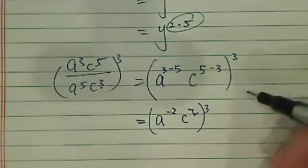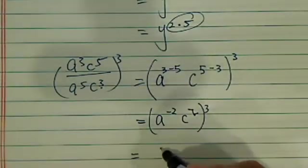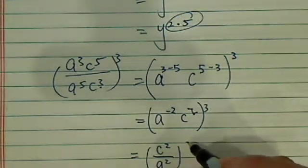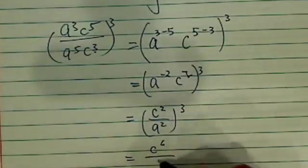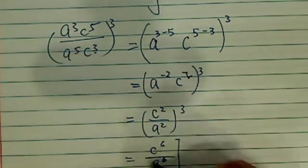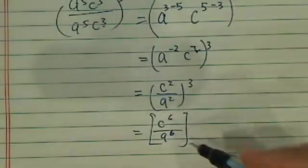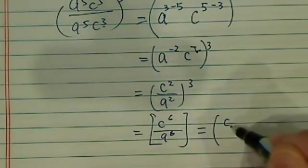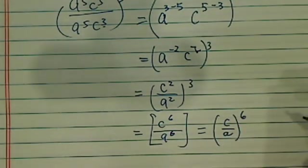The whole thing to the third — c squared and a to the minus two, the whole thing cubed — gives you c to the sixth and a to the negative sixth. So here's your answer, or if you want to keep it even simpler, it's c divided by a, the whole thing to the sixth.